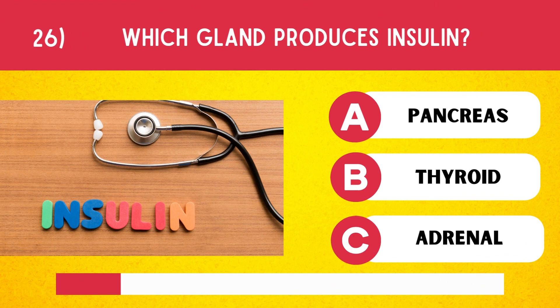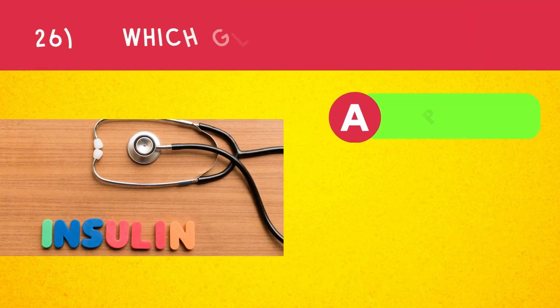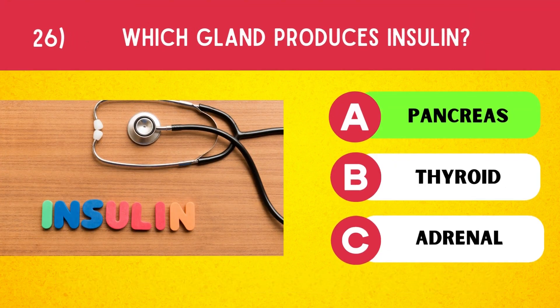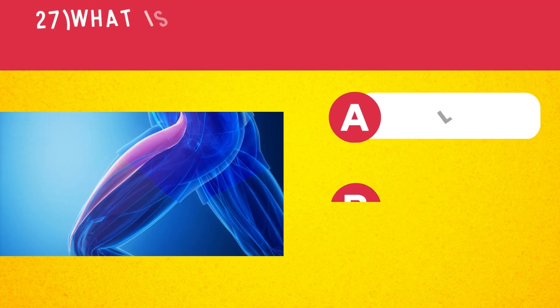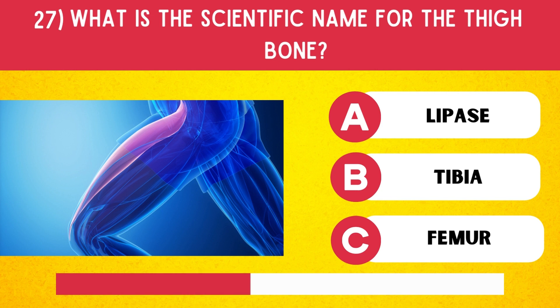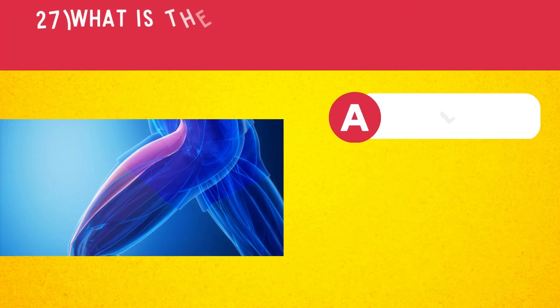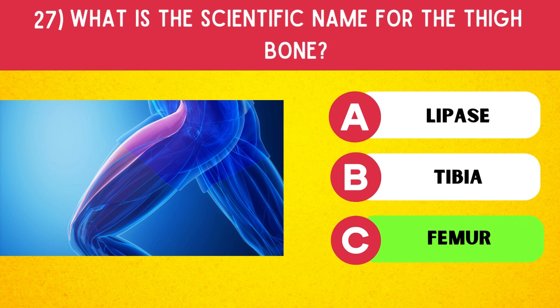Which gland produces insulin? Pancreas. What is the scientific name for the thigh bone? Femur.